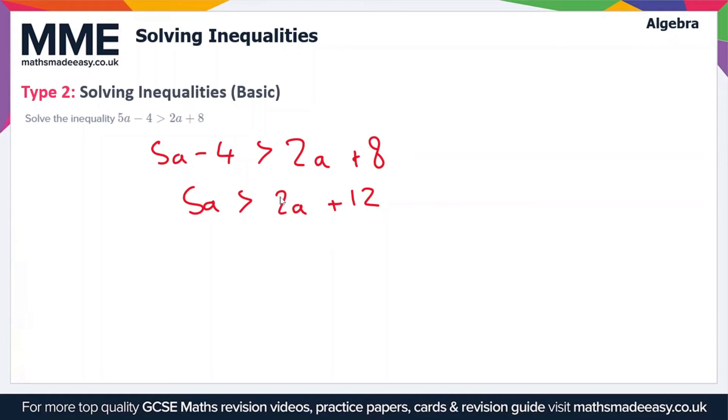Now we're going to subtract 2a from both sides to just have the a's all on one side, so we're going to get 3a is greater than 12. Now we just need to divide both sides by 3 to get a on its own, so a is going to be greater than 4.